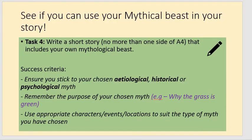Finally, the main bit of this lesson is to see if you can use your own mythological beast in your story. Task four is to write a short story — I don't want any more than one side of A4. I would say aim for half a side to one side. That's enough for you to include a start, middle, and ending, and make sure it includes your mythological beast.